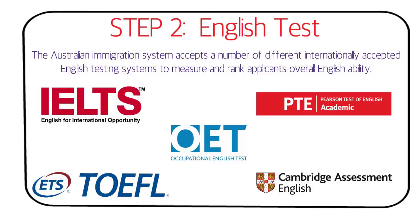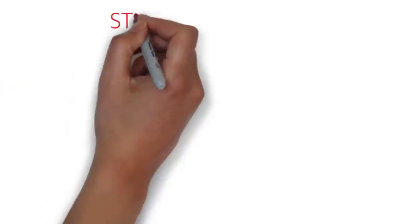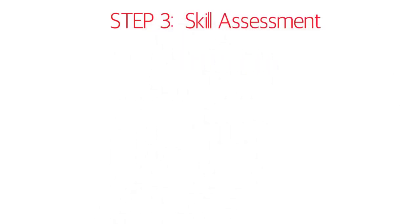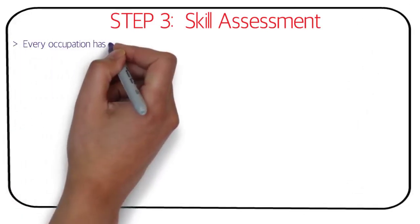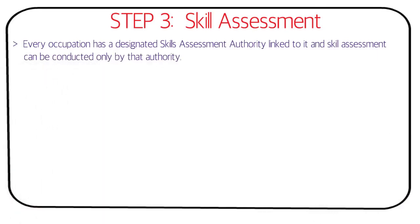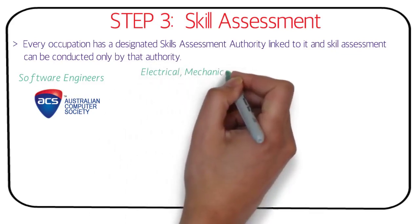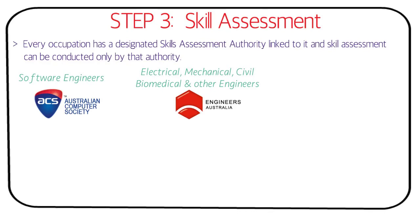Step three is skill assessment — very important, so please pay attention. Every occupation has a designated skill assessment authority linked to it, and assessment can only be conducted by that authority. For example, software engineers are assessed by the Australian Computer Society (ACS); electrical, mechanical, civil, and biomedical engineers by Engineers Australia; and medical-field occupations by the Medical Board of Australia.